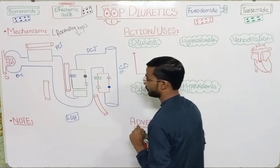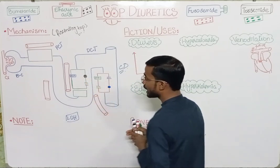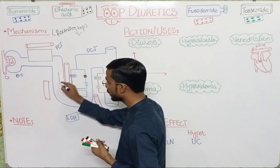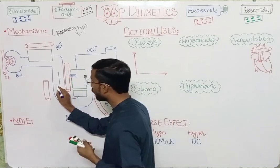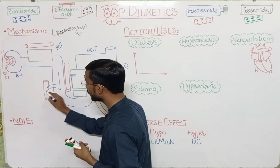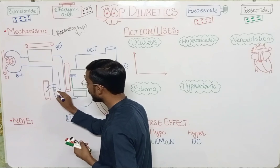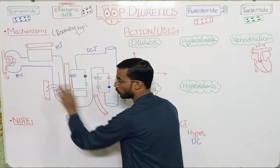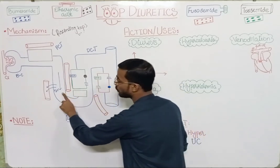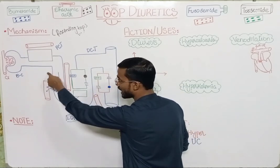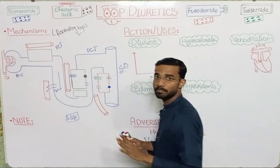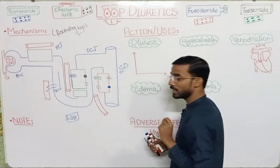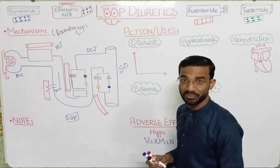In the descending loop of Henle, water is absorbed. Water moves first into the interstitial space and finally into the blood vessels. But in the ascending loop, you will see the absorption of different ions.